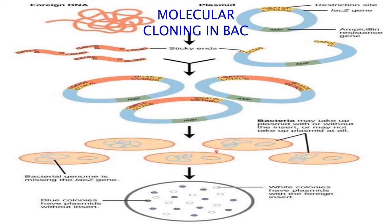After inserting the gene of interest into the BAC vector, the vector is transformed into bacterial cells and allowed to amplify so that we can get multiple copies of the BAC vector. Along with the vector, the gene of interest is also going to be multiplied.